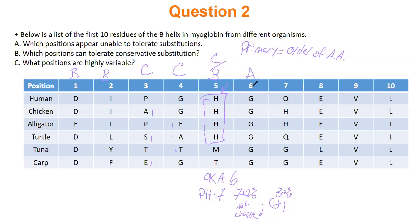Position six is always glycine — that tells you glycine is critical at that position and no other amino acid works, so it's A. Position seven has polar, charged-polar, and small residues — all over the place, so C. Position eight is C because you have nonpolar and negatively charged residues — they're mixed. Position nine doesn't change, so A. Position ten is conservative, so B. When deciding between C and B, as we saw for position five, there's some wiggle room. But A — unable to tolerate substitutions — is always obvious.